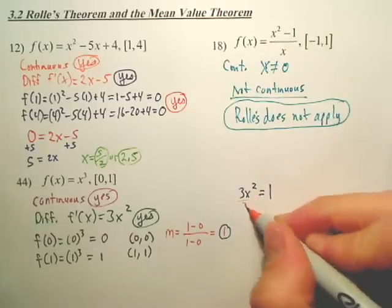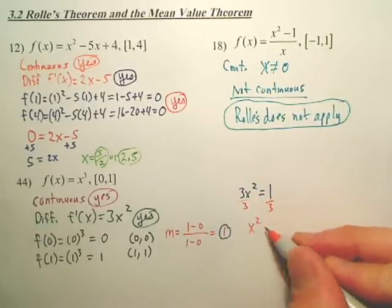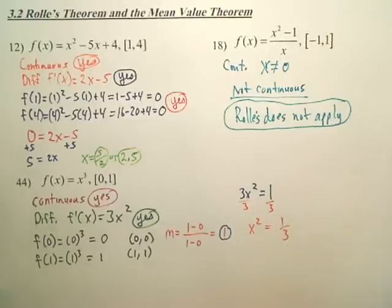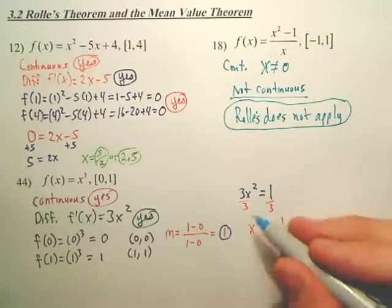So solve this. First, divide by 3. And then we're going to what? Square root both sides.